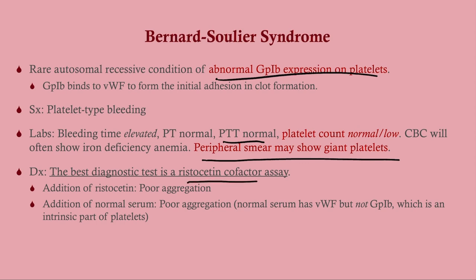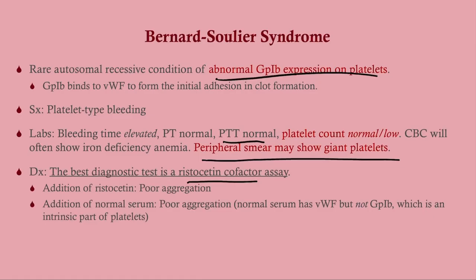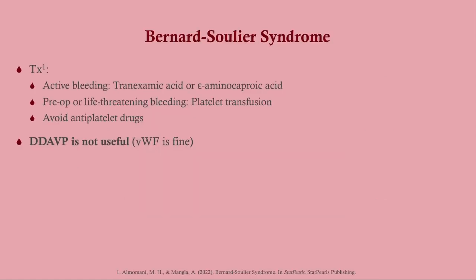The best diagnostic test is the ristocetin cofactor assay. When we add ristocetin, we get poor aggregation — same as Von Willebrand's, because we are lacking either Von Willebrand factor or GP1b. But when we add normal serum, we are adding Von Willebrand factor — and that's not the problem here. The problem is GP1b, which we are not adding. So you will not get normalization when you add normal serum; you'll have poor aggregation no matter what. That is what separates Bernard-Soulier from Von Willebrand's disease on the cofactor assay.